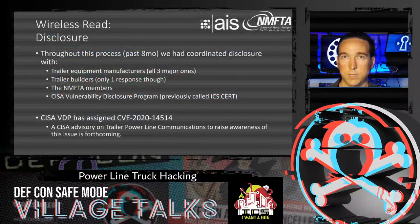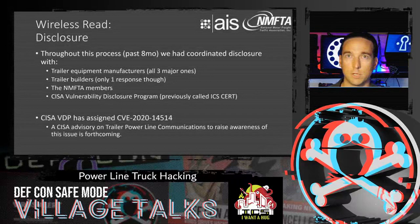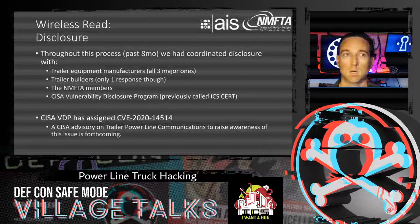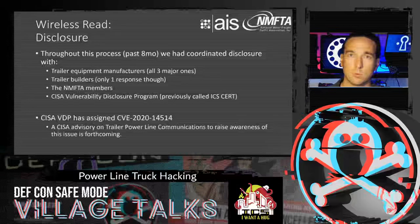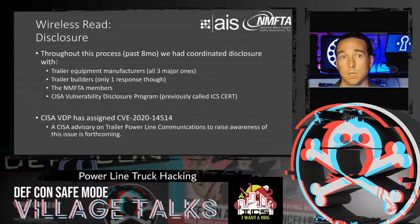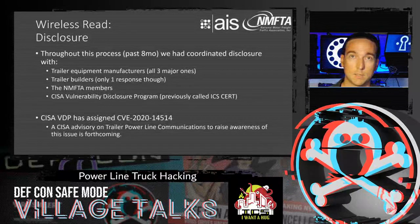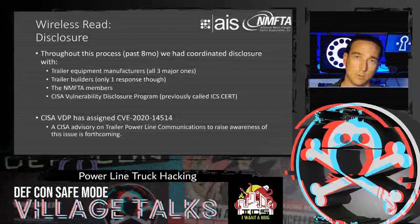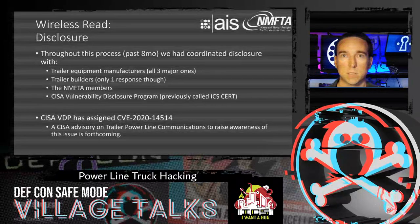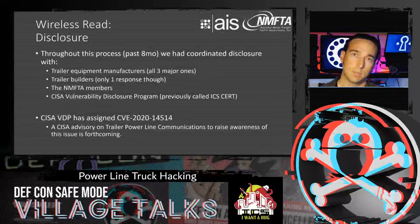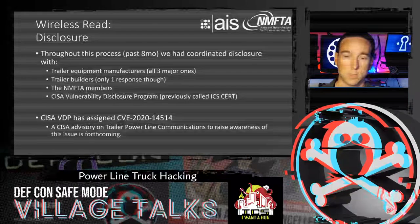This issue has been disclosed over the past eight months. We contacted all three major trailer equipment manufacturers and reached out to all trailer builders — only one responded. We coordinated disclosure with NMFTA members, sponsors, and what was previously ICS-CERT, now the CISA Vulnerability Disclosure Program, who also reached out to non-responsive trailer builders. CISA VDP has assigned CVE-2020-14514, and an advisory on trailer power line communications is forthcoming.